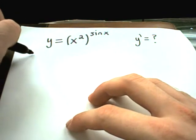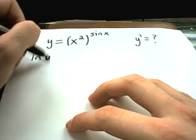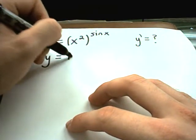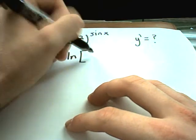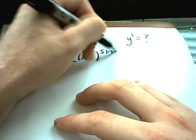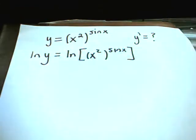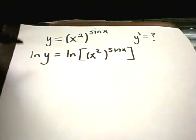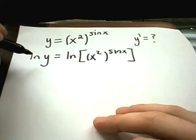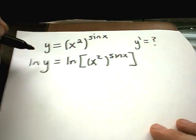So again, the basic idea, we'll take the natural logarithm of the left side, we'll take the natural logarithm of the right side. And there's nothing magic about the natural logarithm. You could use any logarithm you want to, but the derivative of the natural logarithm is kind of the most simple of all the derivative formulas.